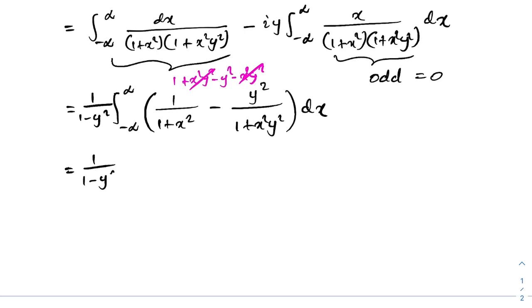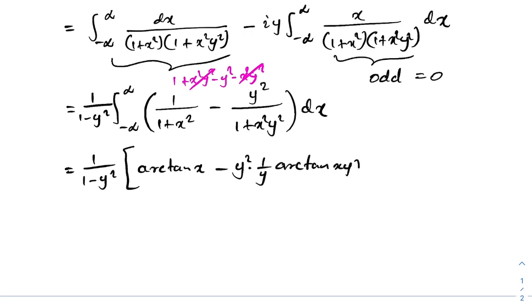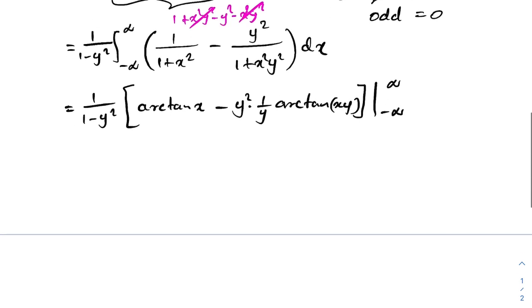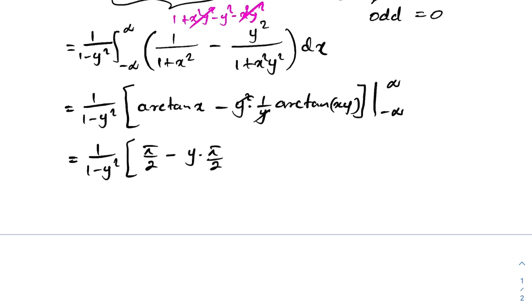We can now integrate both arctan terms. We get 1/(1 - y²) times [arctan(x) minus (y²)(1/y) arctan(xy)], evaluated from -∞ to ∞. Plugging in the limits: arctan(∞) = π/2, and arctan(-∞) = -π/2.